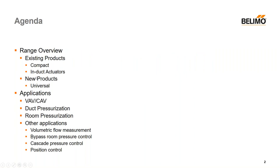We'll start with the range overview and go over some of the existing products available today. I also want to talk about some new products that are now available but haven't been advertised yet. Then I'm going to touch on different applications including variable air volume control, constant air volume control, duct pressurization, and room pressurization. After that I'll talk about how you can use these products for better indoor air quality.